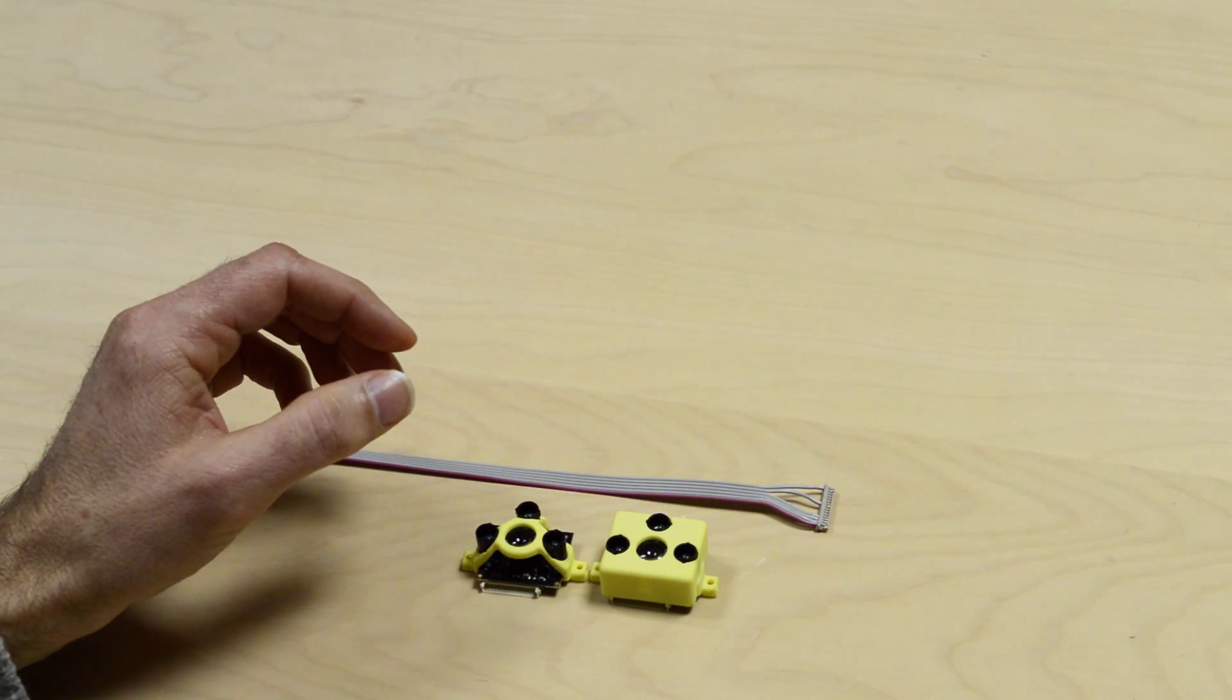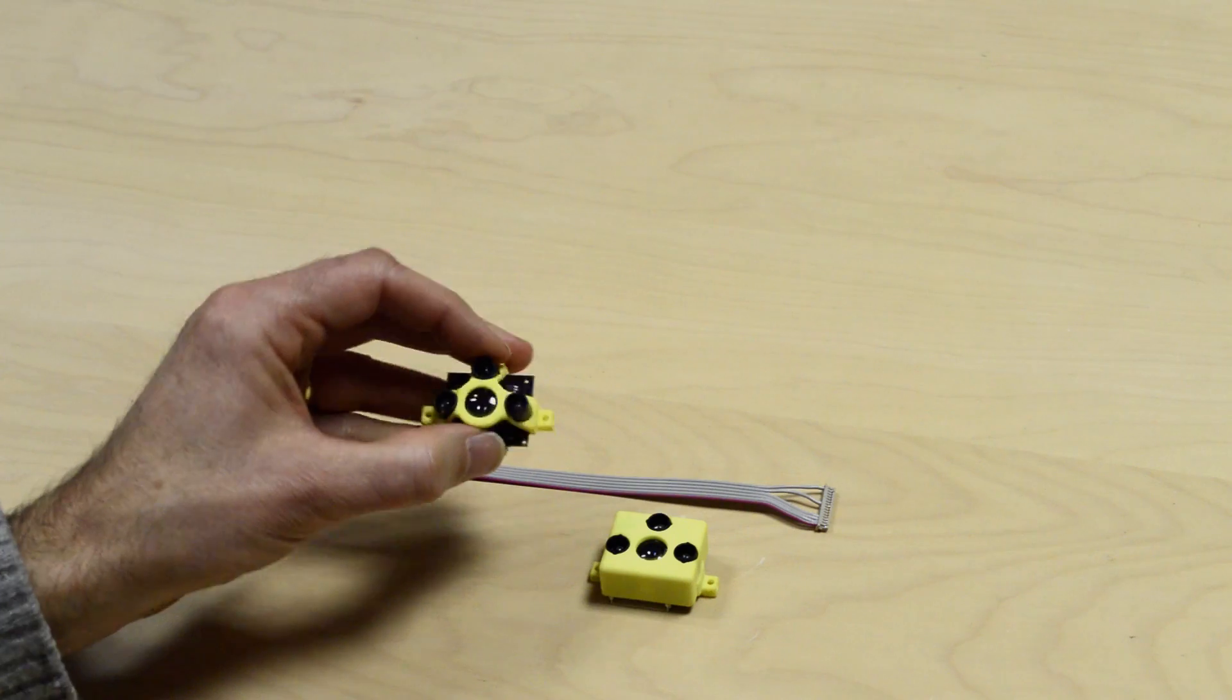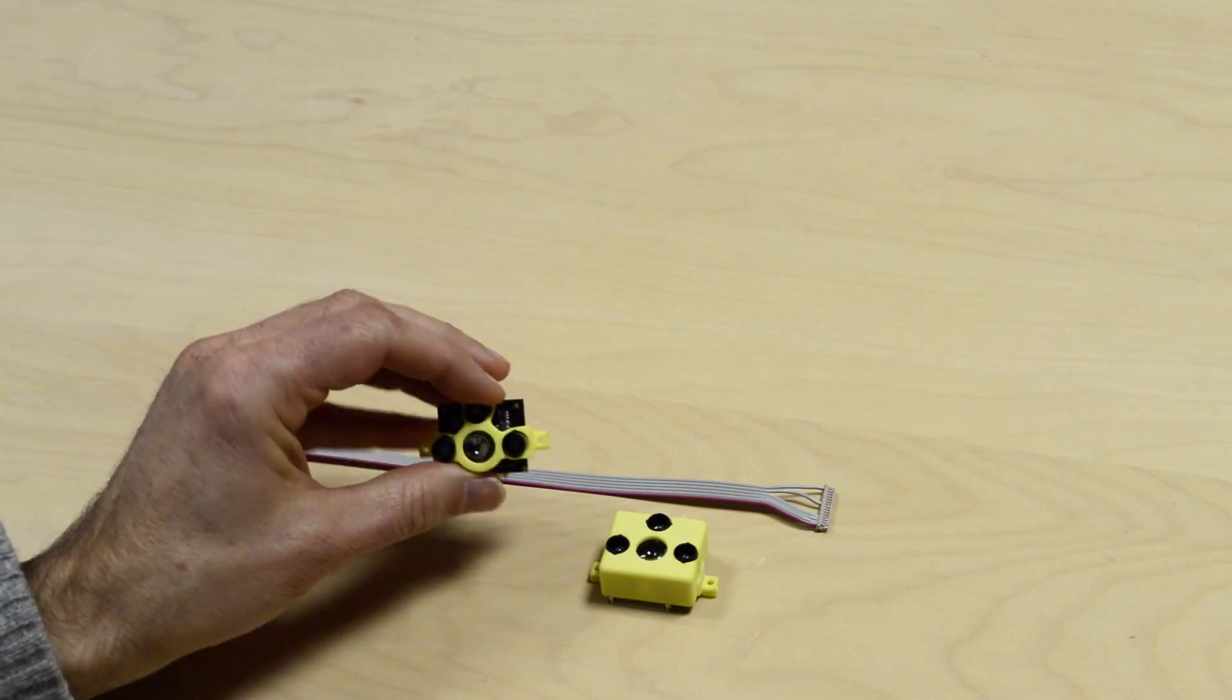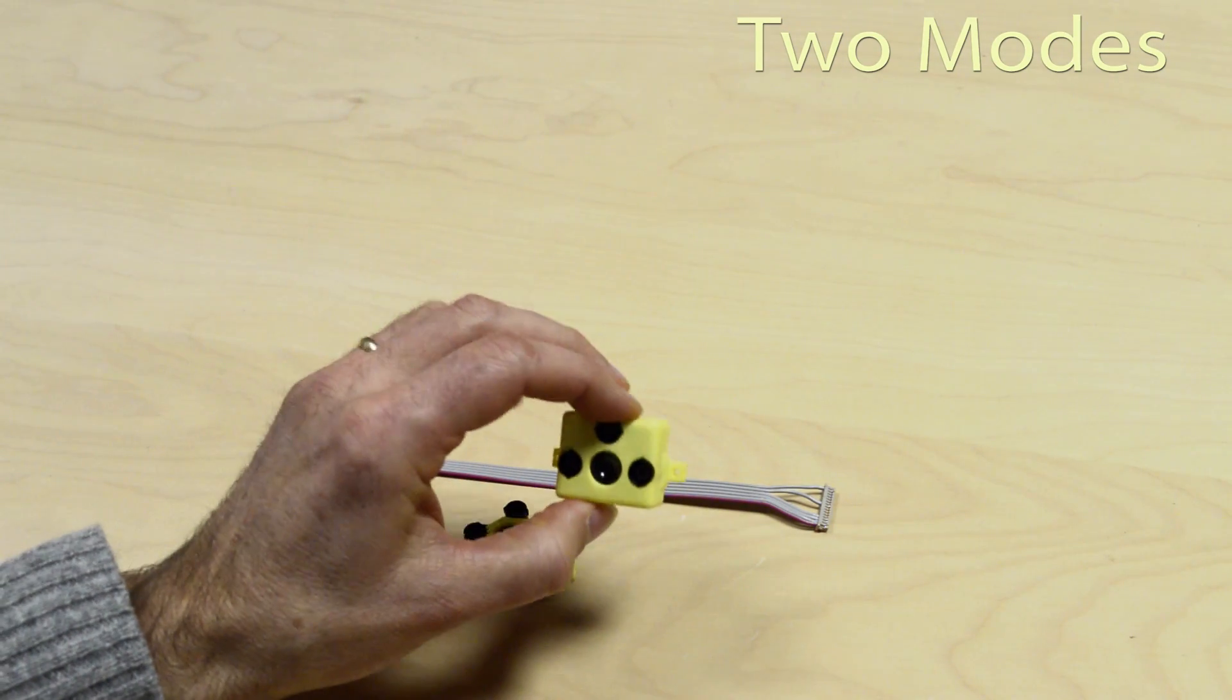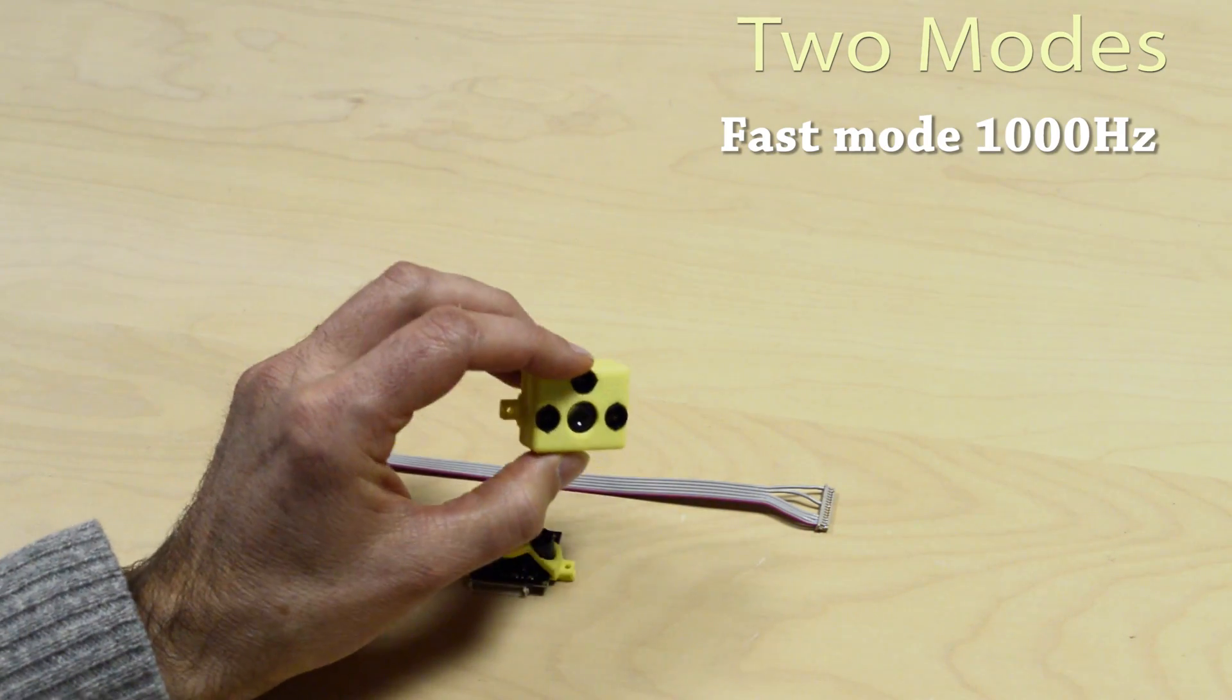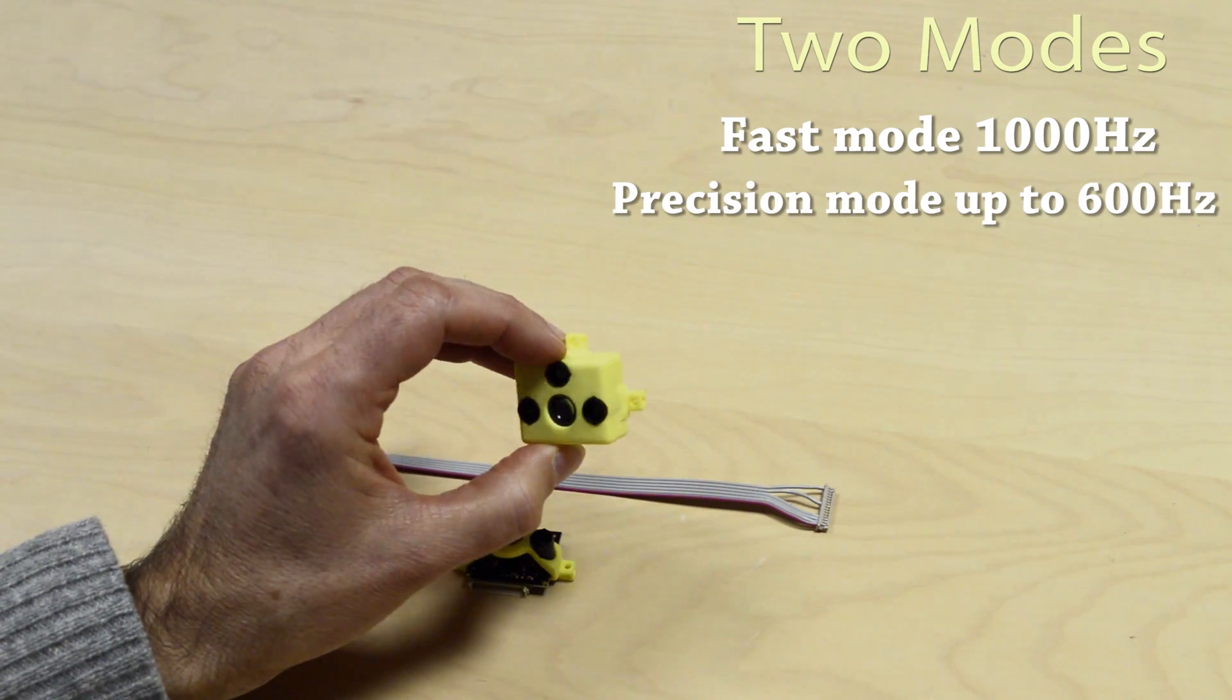But what's really impressive is the performance. These sensors have a range from 20 centimeters up to 14 meters, and the sensors have two operating modes. In fast mode, distance measurements are streamed at 1 kilohertz, and in precision mode up to 600 hertz.